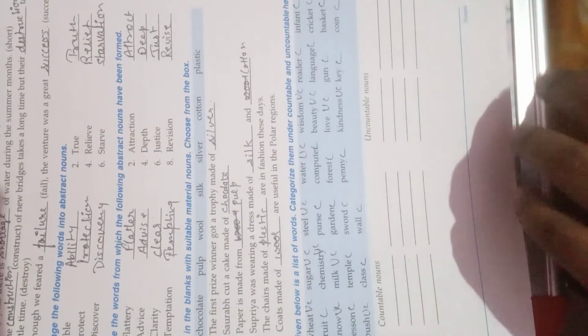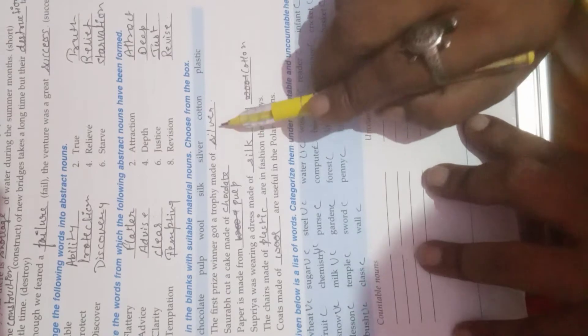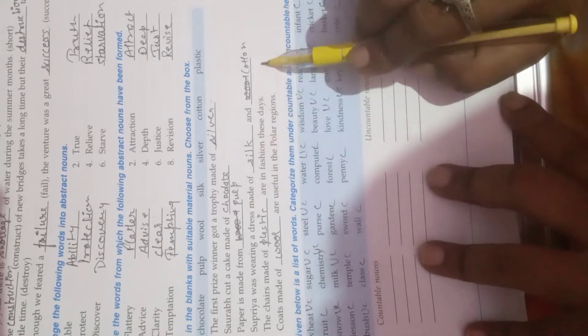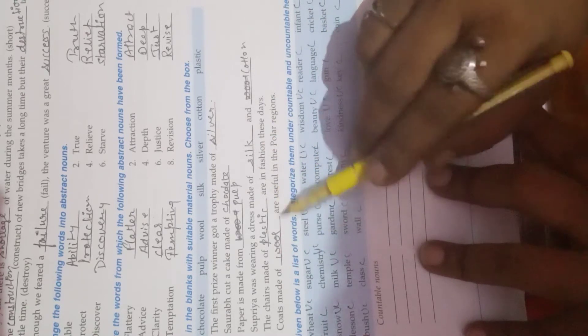Now we have to fill out the blanks from material nouns. First, silver. Second, chocolate. Third, pulp. Fourth, silk and cotton. Fifth, plastic. Sixth, wool.